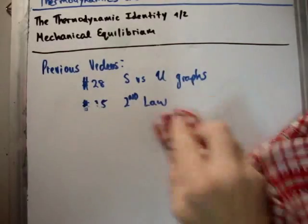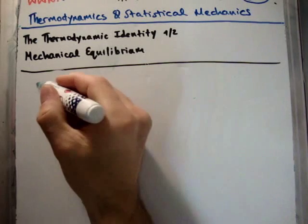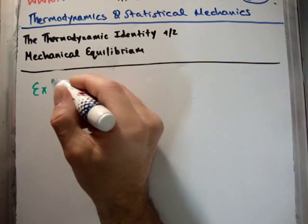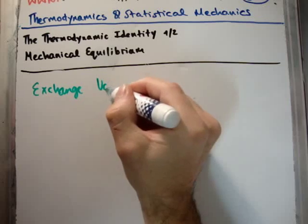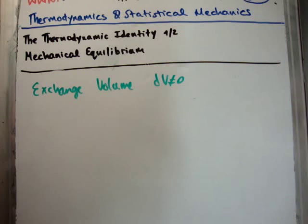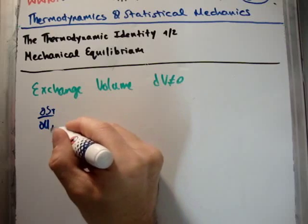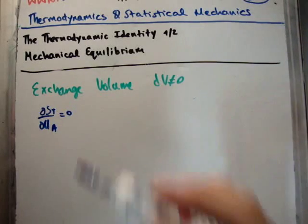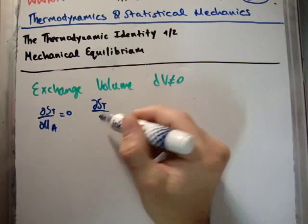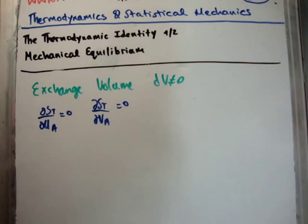If we now allow the system to also exchange volume, that means dV is not zero. How do we reach equilibrium if the system can also exchange volume? Previously we just said equilibrium occurs when ∂S_total/∂U_a = 0, but that didn't account for volume. Now we also require ∂S_total/∂V_a = 0, because we have this additional exchange of volume.